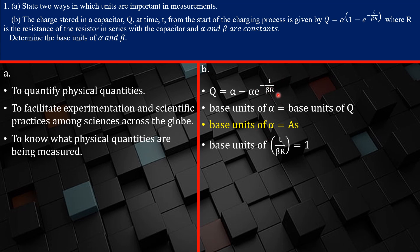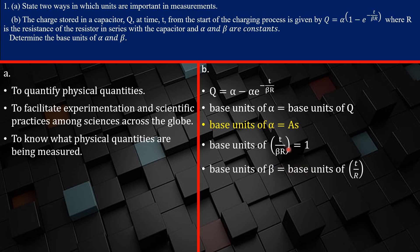The base unit of this power expression has to equal one. So we have t over beta·R equals one, which means beta equals t over R. Therefore the base unit of beta is the base unit of t divided by the base unit of R — that is, seconds divided by the unit of R.